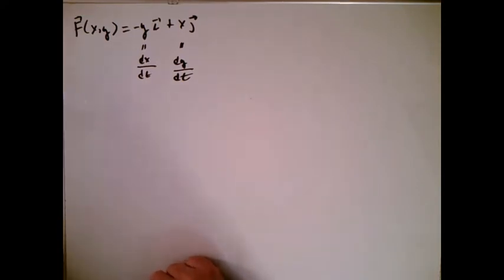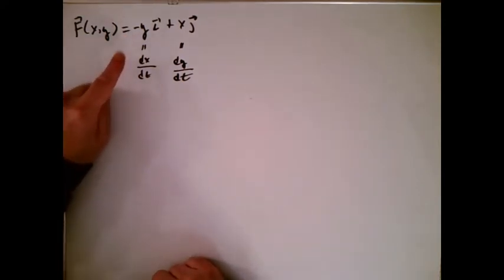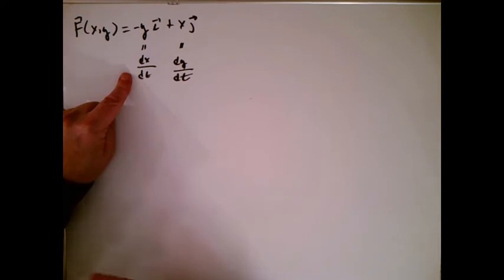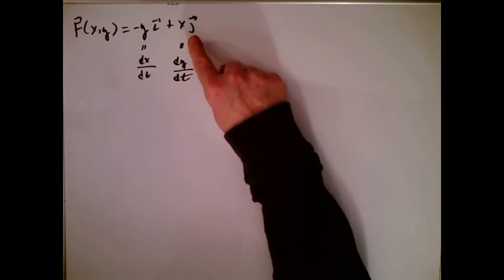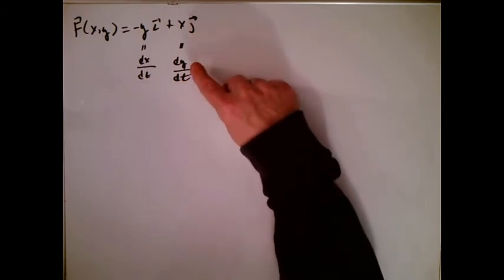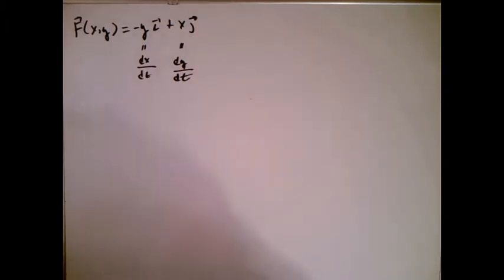knowing that this is a velocity vector, we set minus y equal to the i component of any velocity vector. And we looked at x and we set that equal to dy dt, which is the j component of any velocity vector. And we're able to eliminate t and see that the flow lines actually were circles, which is great.